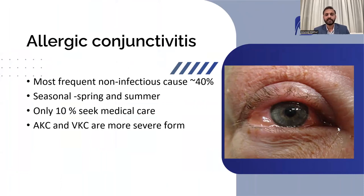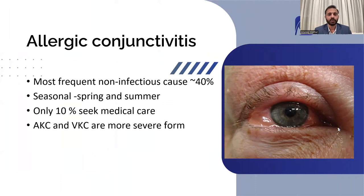Moving to non-infective conjunctivitis — the most common cause is allergic conjunctivitis, which makes up about 40% of total conjunctivitis cases. It is more commonly seen in seasons like spring and summer, especially when the weather is changing. People prone to getting allergies show signs of allergic conjunctivitis frequently. It's a very mild form of conjunctivitis and doesn't produce a lot of sticky discharge or intense congestion, so only 10% of these patients seek medical care.